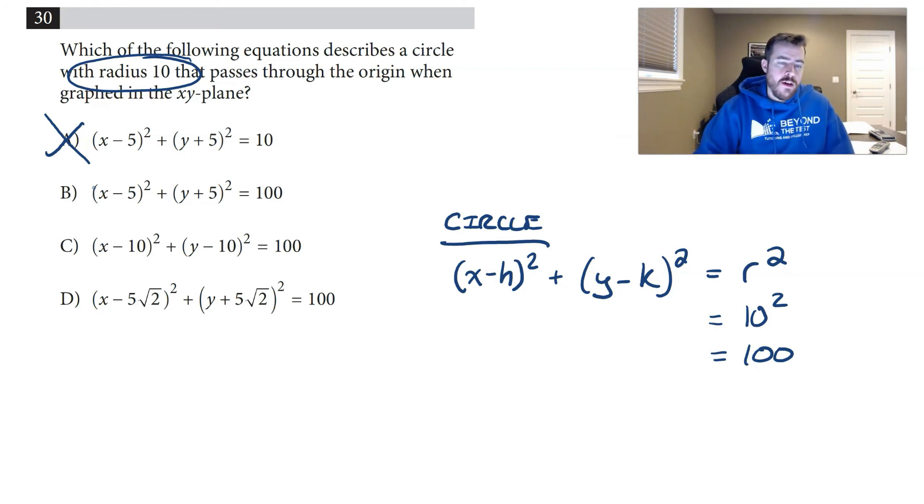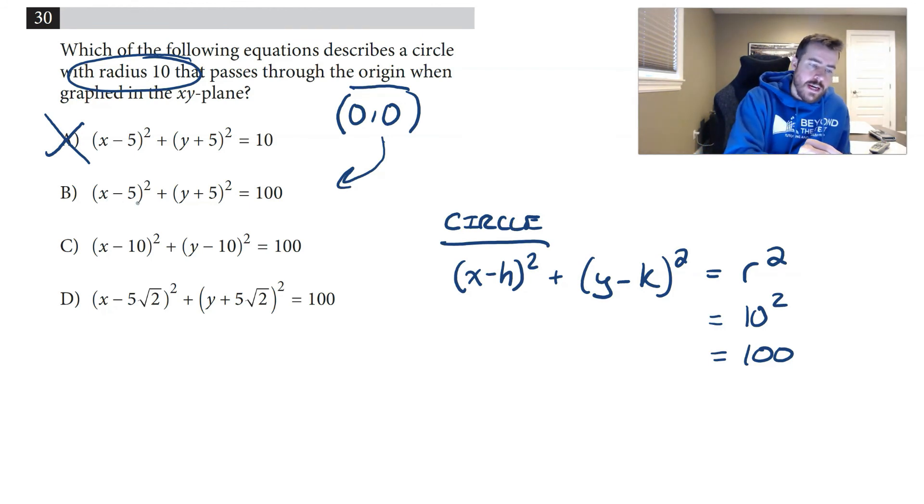The easiest way in my opinion to approach this is it says it passes through the origin, which is just that point (0, 0). We could literally just test it out and see which equation works. If I went to B and put in (0, 0): 0 - 5 would be -5, -5² would be 25, plus 0 + 5 would be 5² is 25. But 25 + 25 does not equal 100, that's only 50, so that would be out.